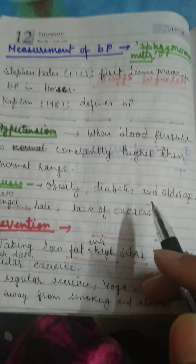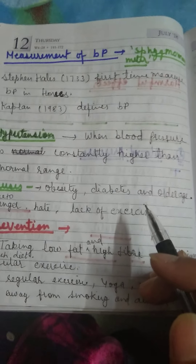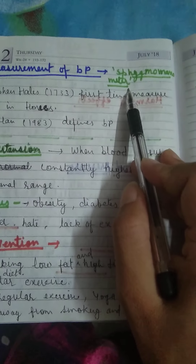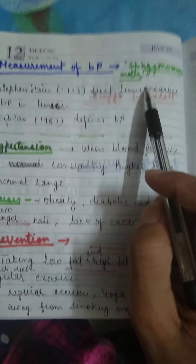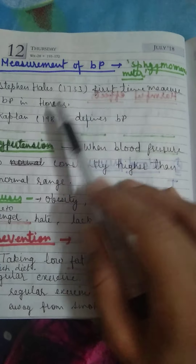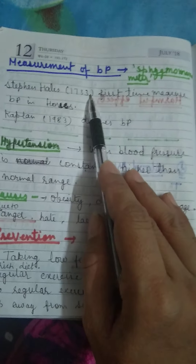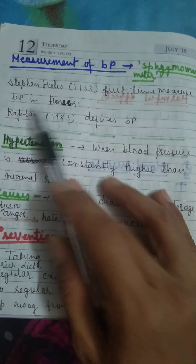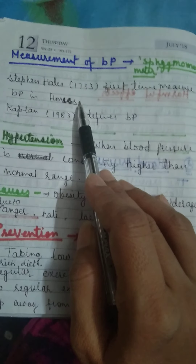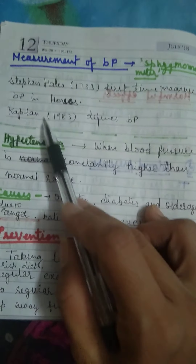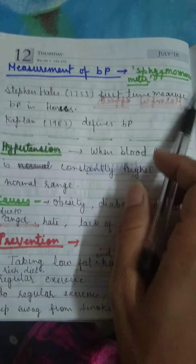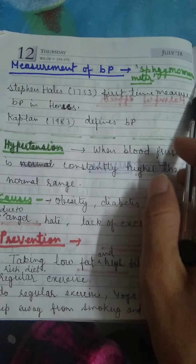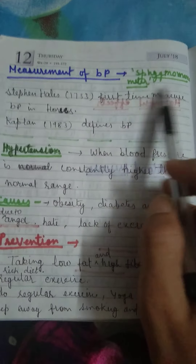The next topic is measurement of blood pressure. Blood pressure is measured using an instrument called a sphygmomanometer. First of all, Stephen Hales in 1733 measured blood pressure in horses. Later, Copland was the first to define blood pressure. The instrument used to measure blood pressure is the sphygmomanometer.